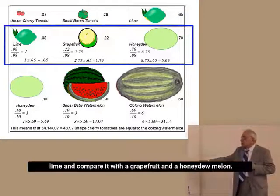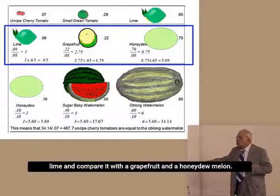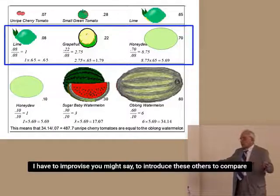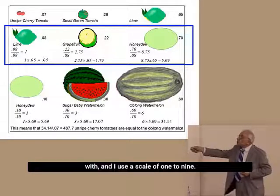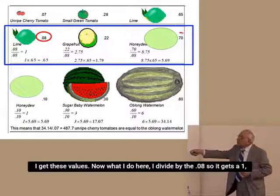Then I take the lime and compare it with a grapefruit and a honeydew melon. I have to improvise, you might say, to introduce these to compare it with. And I use a scale of 1 to 9. I get these values.